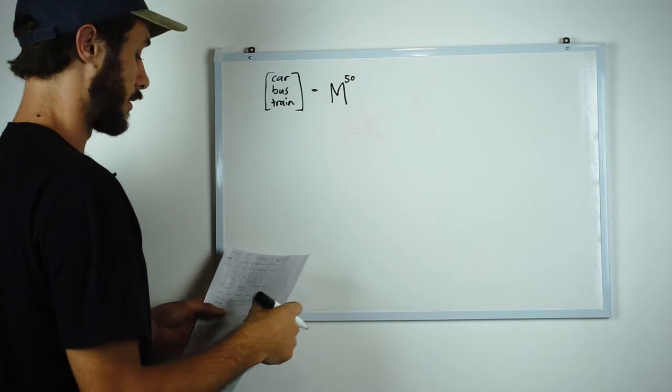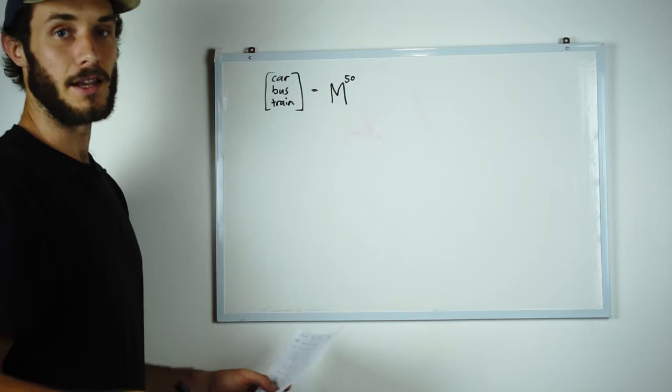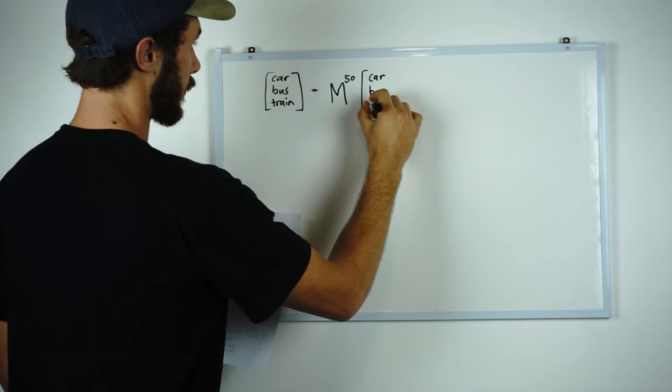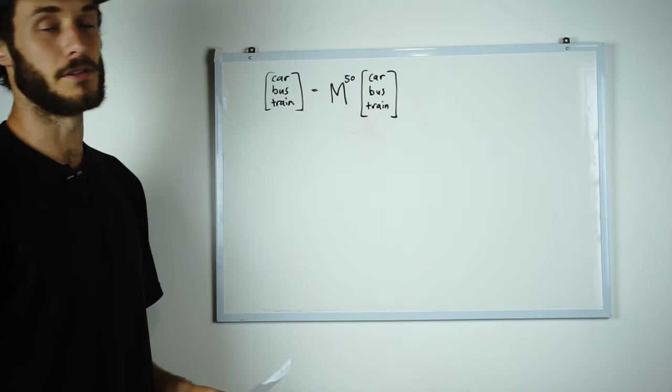So this matrix is a transition matrix and tells us how the state is changing from each time period. We then multiply that by the initial state of the total percentage passengers that fall under car, bus and train.